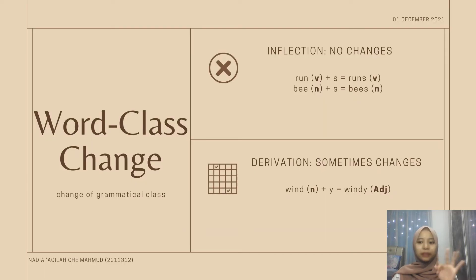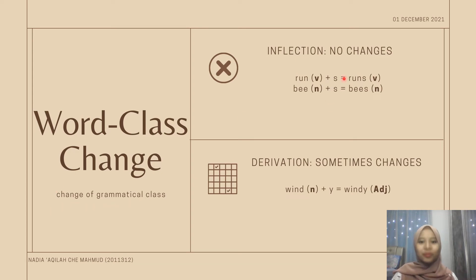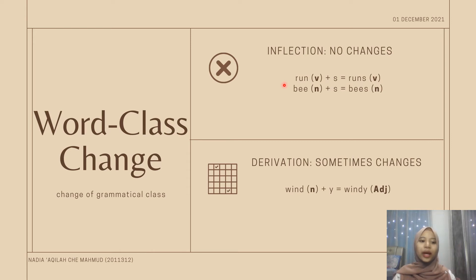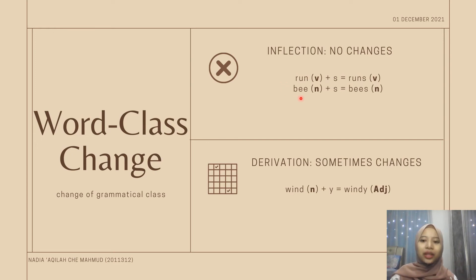The third property is word class change, or simply called a change of grammatical class. For canonical inflectional morphemes, no change of word class happens. For example, the word 'run,' which is a verb — when added with '-s,' an inflectional morpheme, it becomes 'runs,' which is also a verb. And in the second example, the noun 'bee,' when added with '-s,' becomes 'bees,' which is also a noun.